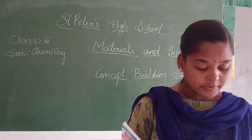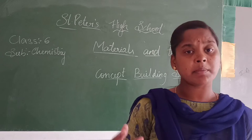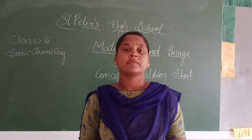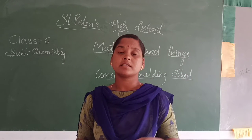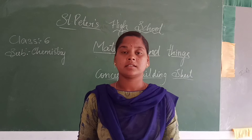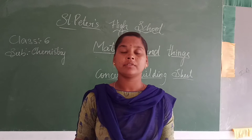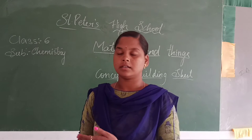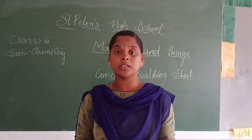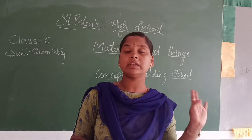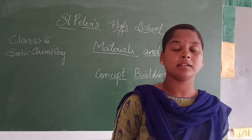An object made up of several materials together — look around yourself and think of some objects. Take the example of a door. A door is made up of wood, then iron nails and other fittings, and paint.